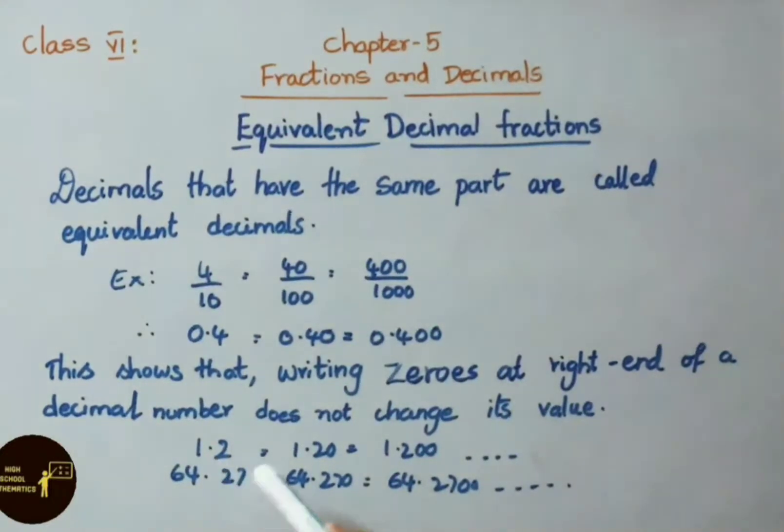See another example. 1.2 equals 1.20 equals 1.200 and so on. Similarly, 64.27, 64.270, 64.2700. So all the three decimal values are same. That's why these fractions are called equivalent decimal fractions.